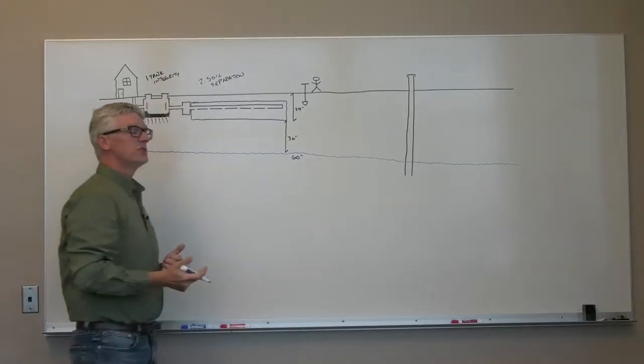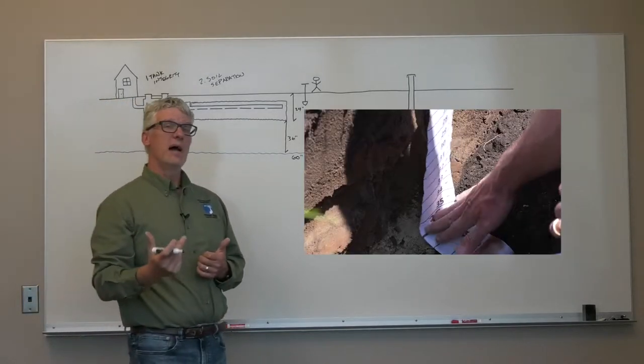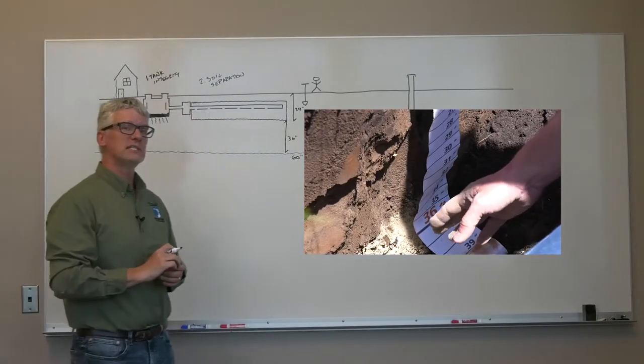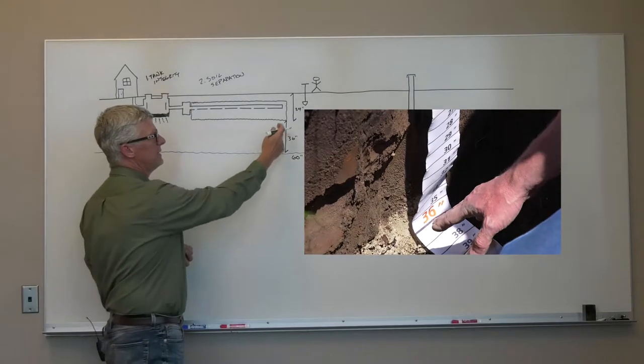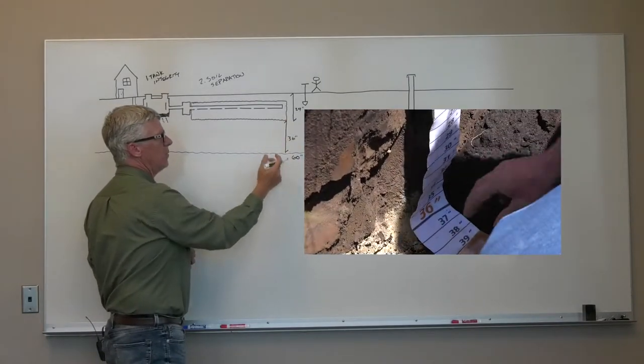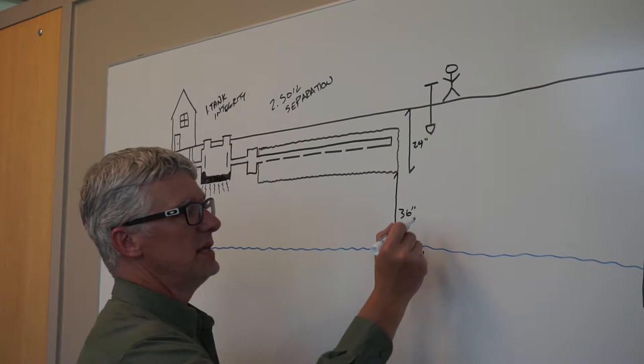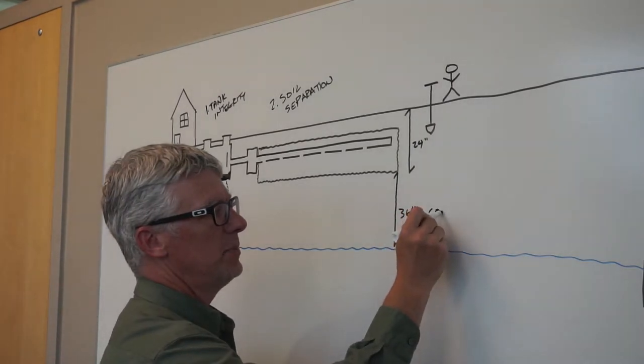The state of Minnesota requires that a compliant septic system have at least 36 inches of separation between the bottom of the system and the water table. So if this were the case, this system would be deemed compliant.